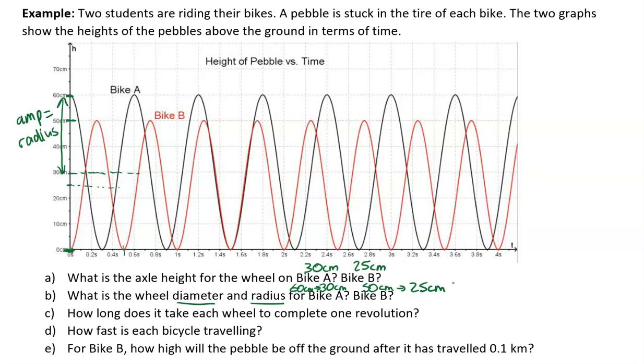The next question says, how long does it take each wheel to complete one revolution? This is where we have to do a little bit more thinking. We have to analyze the graph now on the x-axis. For bike A, it's the black line, going from zero all the way to 0.6 seconds, which means that's one full cycle. So for bike A, it's 0.6 seconds. One full cycle is how long it takes to complete one revolution. For bike B, we noticed that was from zero to 0.5, so that's 0.5 seconds.